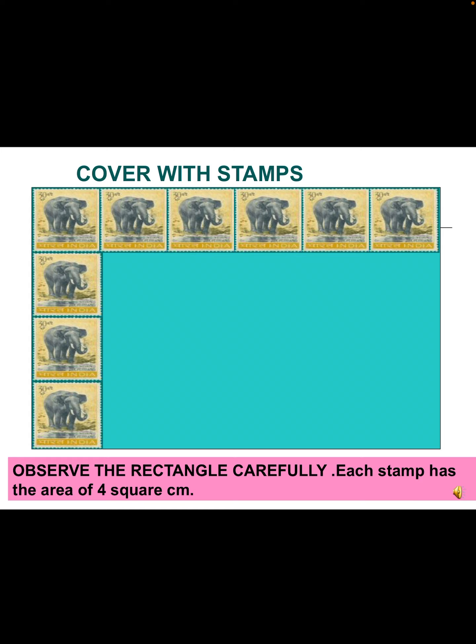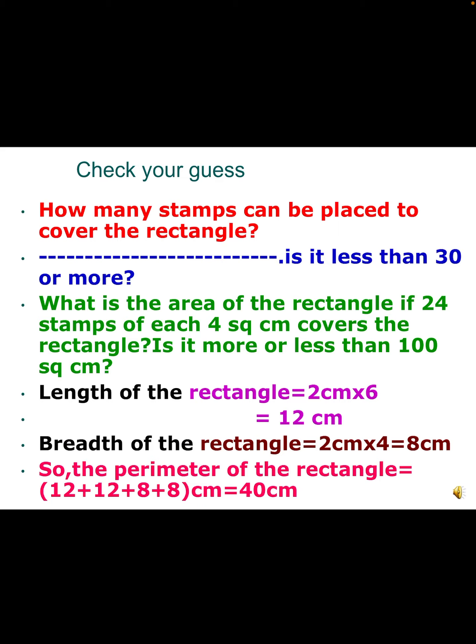Another activity: covering with stamps. You have to put stamps lengthwise as well as breadthwise; each stamp has an area of 4 square cm. Find out the area of the total rectangle after covering with stamps. Questions: How many stamps can be placed — is it less than 30 or more? If 24 stamps of 4 square cm each cover the rectangle, is the area more or less than 100 square cm? Try to find the answers yourself before seeing the solution.